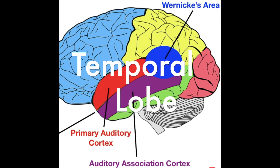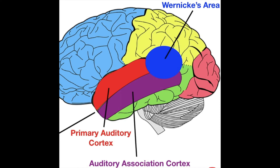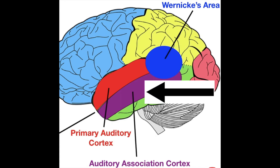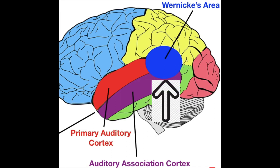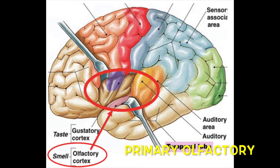Moving on to the temporal lobe. The temporal lobe has mainly four areas to know: the primary auditory cortex, the auditory association cortex, Wernicke's area — which is mainly in the temporal lobe but also has a small part in the parietal, hence called the temporal-parietal region, and is only in the dominant hemisphere, usually the left — and finally, deep-seated, the primary olfactory cortex.